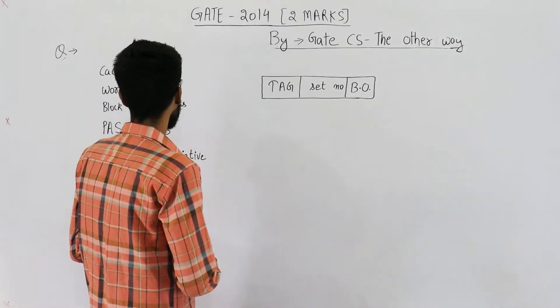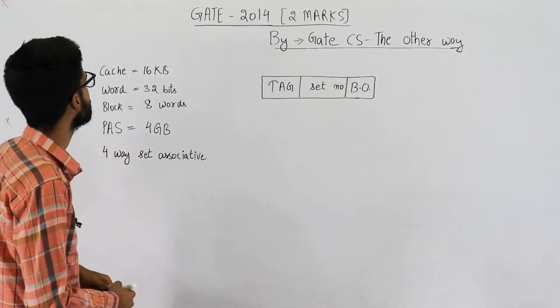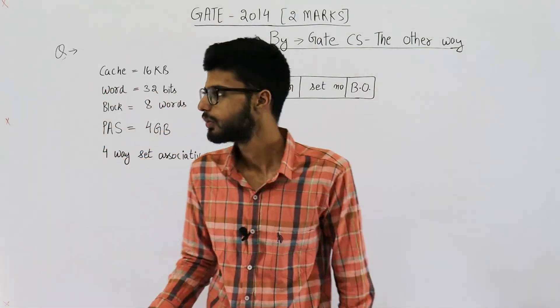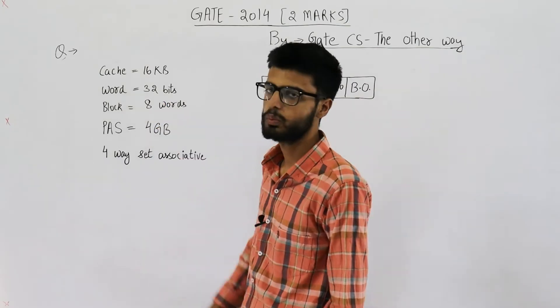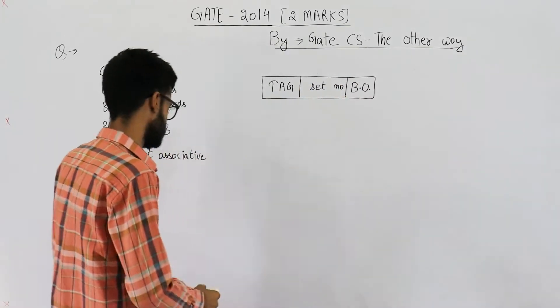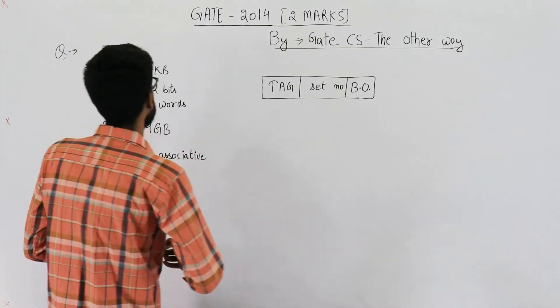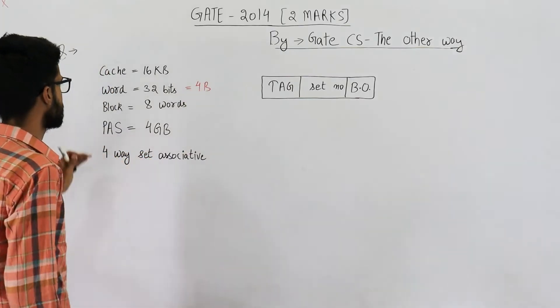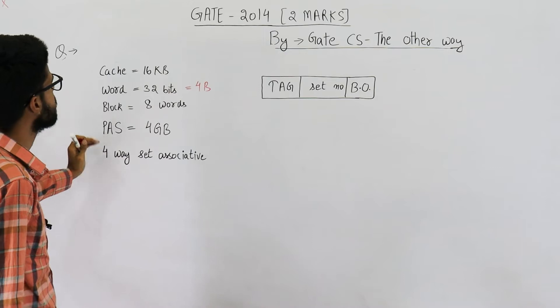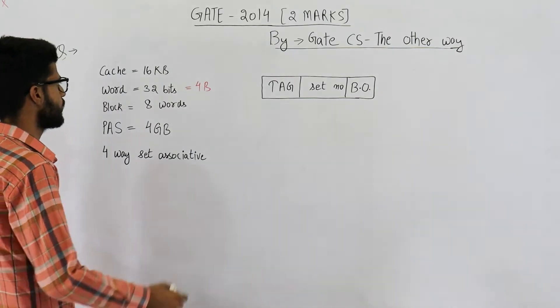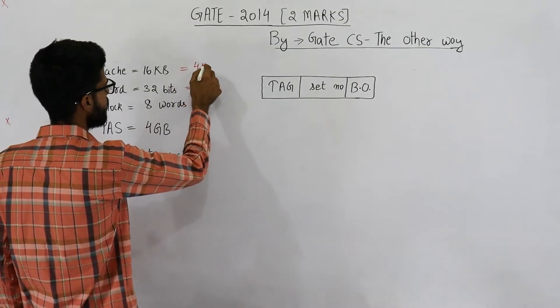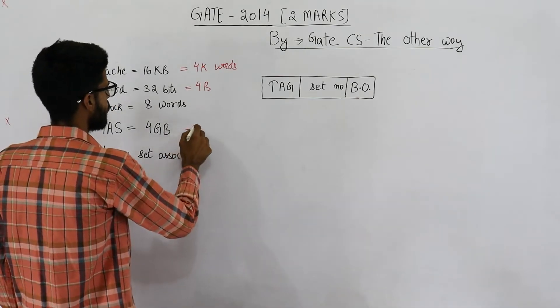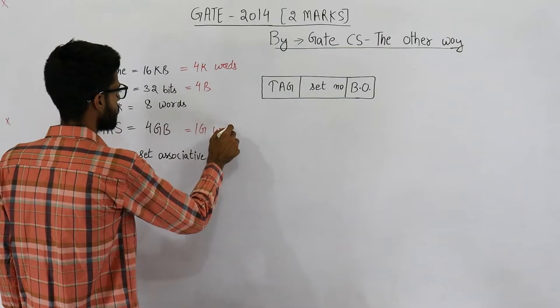Okay, so cache is given as 16 KB. But the thing is, one word is not equal to one byte. They have given that one word is 32 bits. Now, 32 bits mean that one word is of 4 bytes. So let's convert cache as well as physical address space in terms of words. 16 KB will be 4K words, and 4 GB will be 1G words.